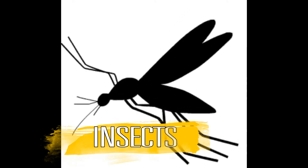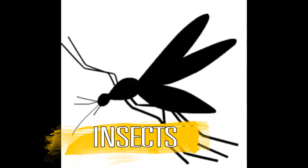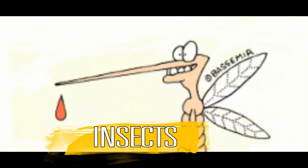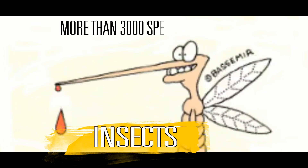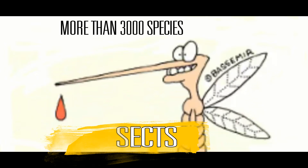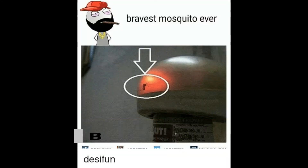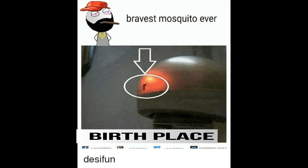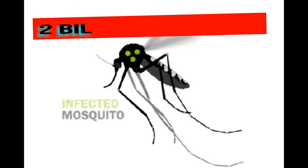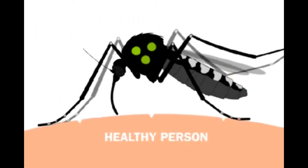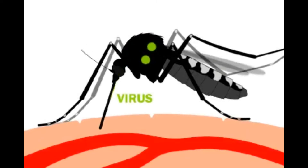Mosquito is an insect. We can see it in our day-to-day life anywhere, any place. Mosquitoes have over 3,000 species in the world. Among them, 40,000 species are found in Florida only. It seems that Florida is the birthplace of mosquitoes. An average of more than 2 billion people will die every year because of mosquito-spreading diseases.